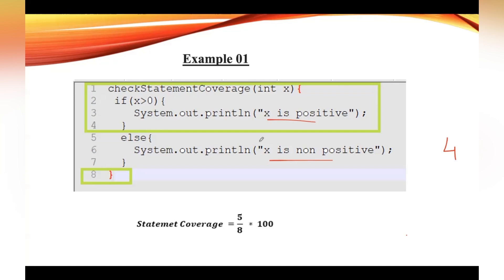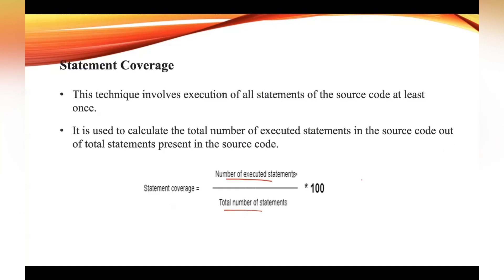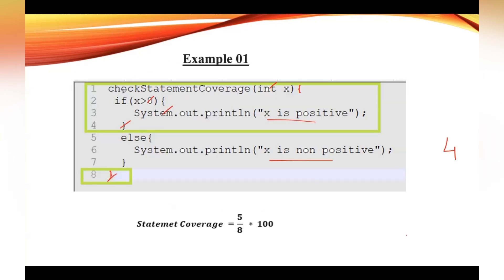When the input value is 4, how many lines will be executed in this code? Lines 1, 2, 3, 4, and 5 — so total number of lines executed when x equals 4 is 5. For the statement coverage formula: number of executable statements divided by total number of statements. We executed 5 statements, and the total number of statements is 1, 2, 3, 4, 5, 6, 7, and 8. So 5 divided by 8 multiplied by 100.